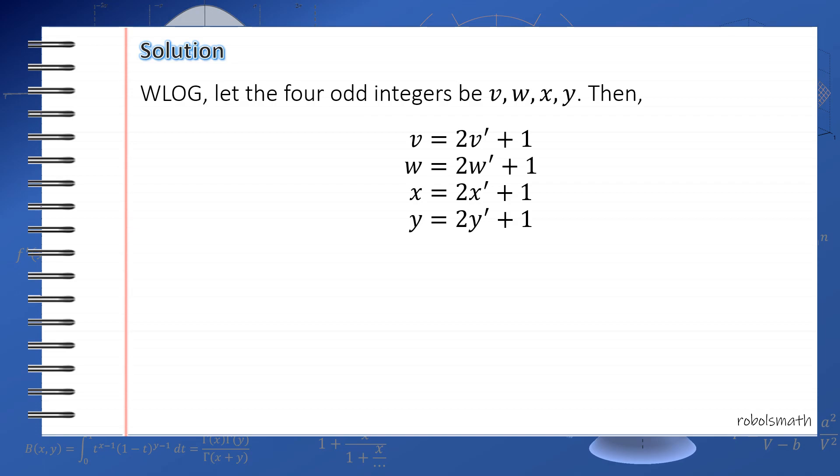And also, by letting this substitution be v' until y', they are allowed to be 0, which is good because it now fits the definition or the condition for stars and bars. Now, if four of them are odd and the sum of the five integers is even, it means that the last term must be even as well.